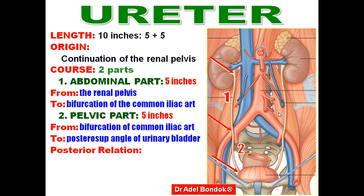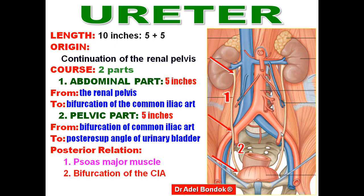Regarding the posterior relation of the ureter, it descends on the psoas major muscle and the genitofemoral nerve, then crosses the bifurcation of the common iliac artery, then descends on the side wall of the pelvis.